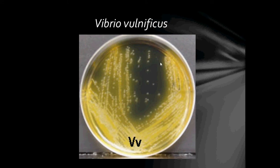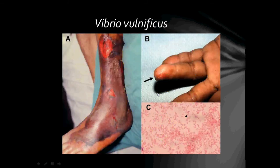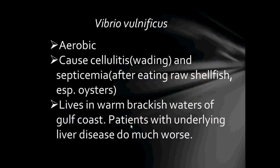This is Vibrio vulnificus grown on TCBS agar. This diagram shows cellulitis. Vibrio vulnificus are aerobic. They cause cellulitis, wading wounds, and septicemia, usually after the consumption of raw shellfish such as oysters. They live in warm brackish waters of the Gulf Coast.